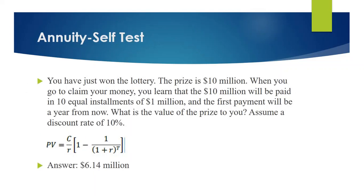Let's look at an example. Suppose you have just won a lottery and the prize is 10 million dollars, but you receive this 10 million in 10 equal installments. That means you receive 1 million dollars every year and your first payment will be a year from now.